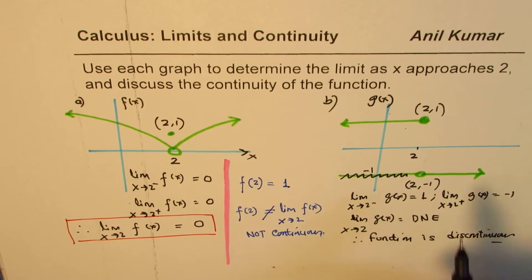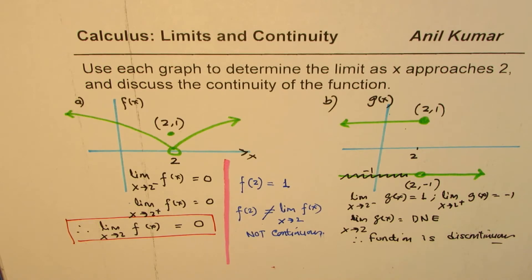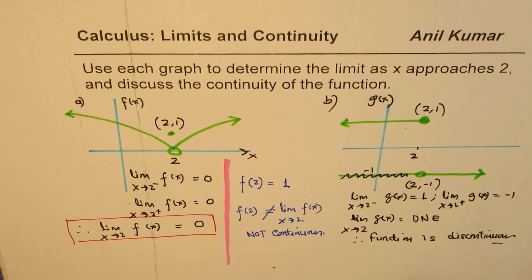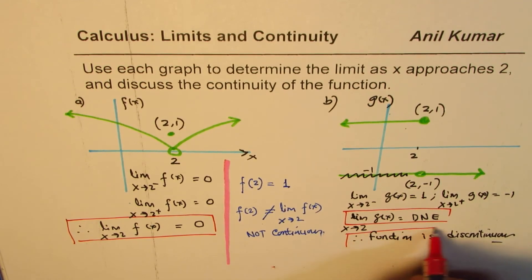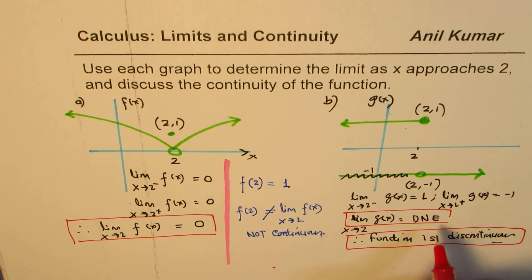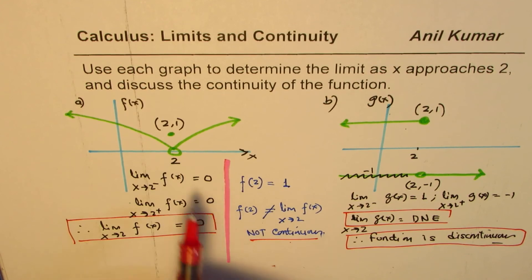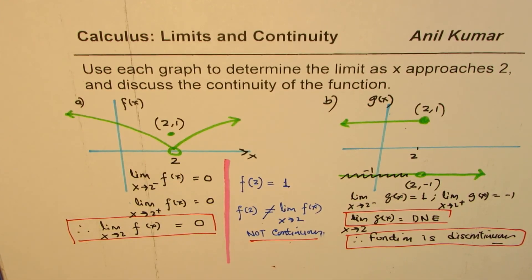The value of g at 2 is 1, but that cannot equal a limit that does not exist. If the limit does not exist, we know the function is discontinuous at that particular point — and that's a good enough reason. So for f(x), the limit exists but the function is not continuous. For g(x), the limit does not exist and the function is also not continuous. I hope that helps — thank you and all the best.